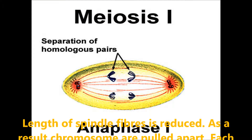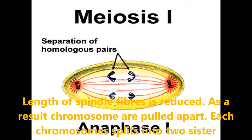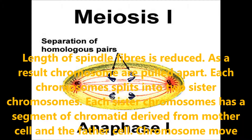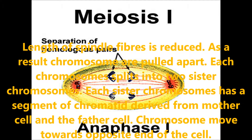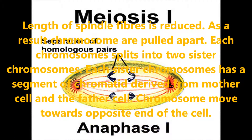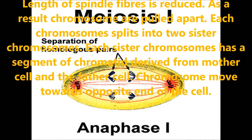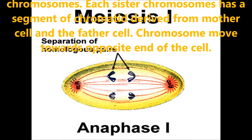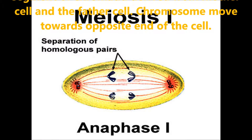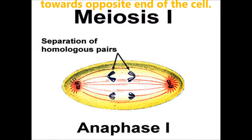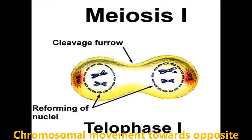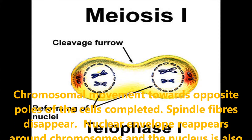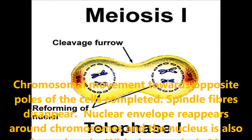In anaphase 1, the length of the spindle fiber is reduced. As a result, chromosomes are pulled apart. Each chromosome splits into two sister chromosomes. Each sister chromosome has segments of chromatid derived from one mother cell and one father cell. Chromosomes move towards the opposite ends of the cell. In telophase 1, chromosomal movement towards the opposite poles is completed.